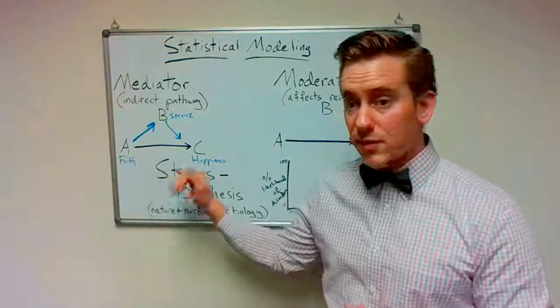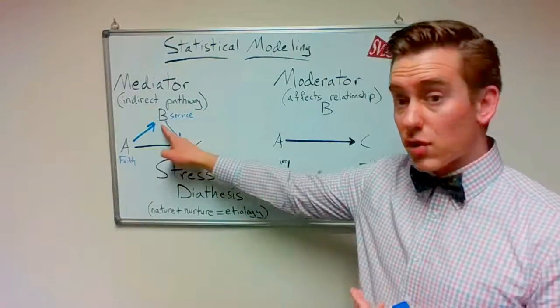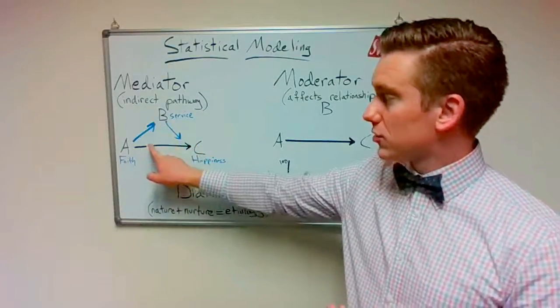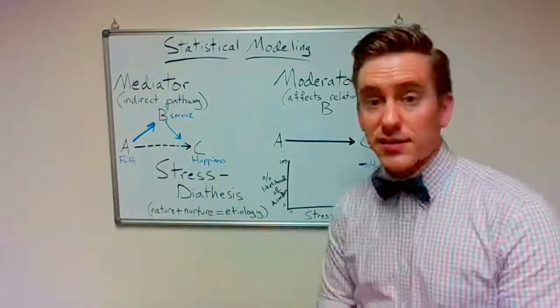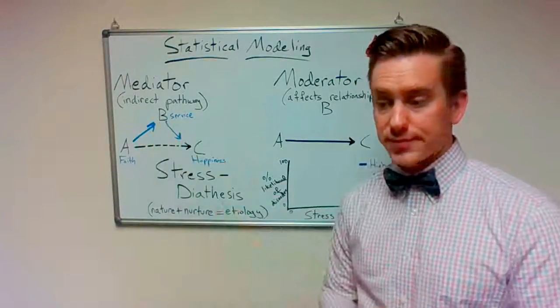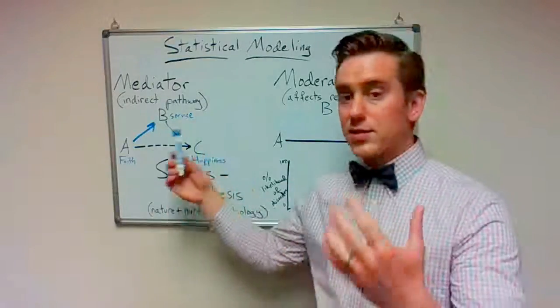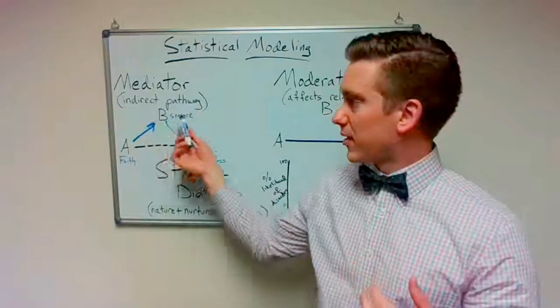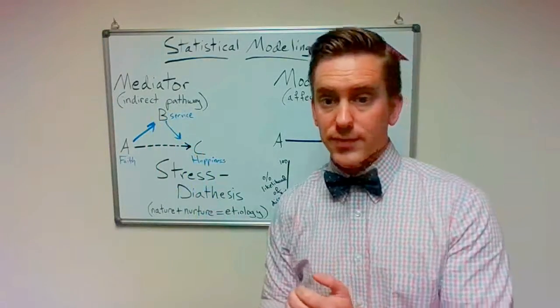An interesting thing about mediator models is that sometimes the mediator variable is such a strong influence that this initial correlation ends up becoming not statistically significant after you account for this middle step. So again, to sum it up, a mediator is an intermediate or indirect pathway variable that contributes to a relationship between two other things.